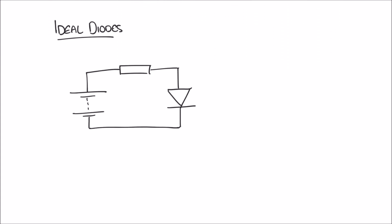Hello and welcome to this video on diodes. In previous videos we've looked at a range of different concepts in electronics and electrical engineering, and we've always looked at circuits that involve resistors — resistive circuits. But in this video we're going to start to look at diodes. This symbol here, that might be new to you, is the symbol for a diode, and we're going to look over a couple of videos at diodes and how they behave in circuits.